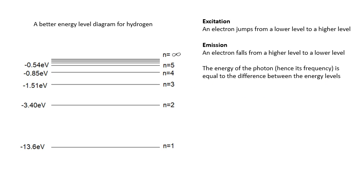This is an energy level diagram for hydrogen. It's more complicated because there are a lot more levels: N equals 1 is the ground state, then N equals 2, N equals 3, N equals 4, and so on all the way up to N equals infinity. When we excite an atom, an electron jumps from a lower level to a higher level. During emission, when an electron falls from a higher level to a lower level, a photon is emitted. The energy of the photon — and hence its frequency — is equal to the difference between the energy levels. That is why we only get definite colors and definite frequencies: because the energy levels are fixed.